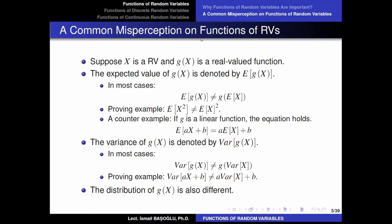A common misperception about functions of random variables: suppose X is a random variable and g(X) is a real-valued function. The expected value of a function of this random variable is represented mathematically as the expected value of g of X. My friends, this is not equal to g of the expectation of X.